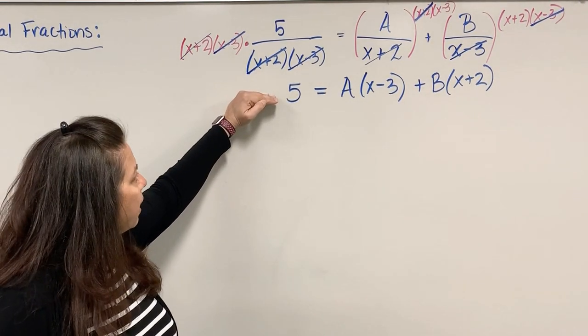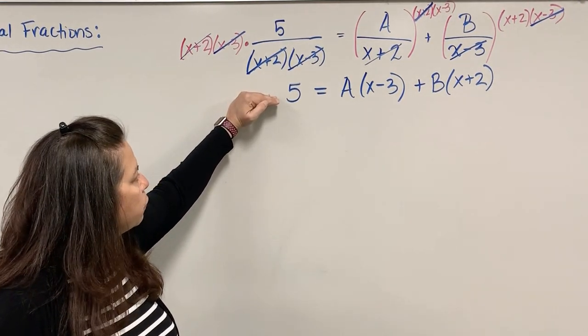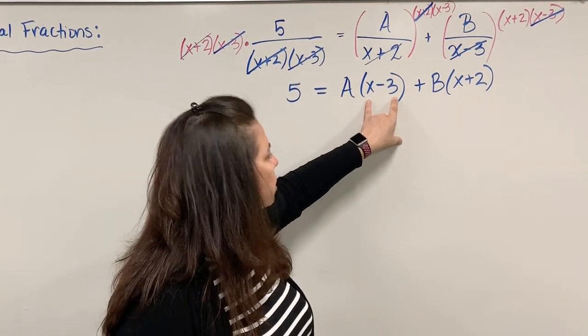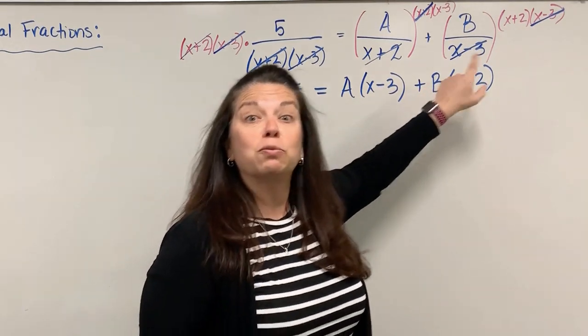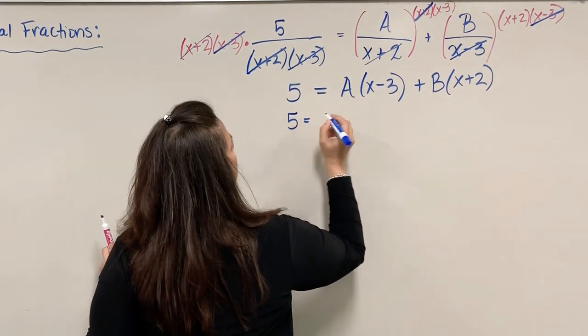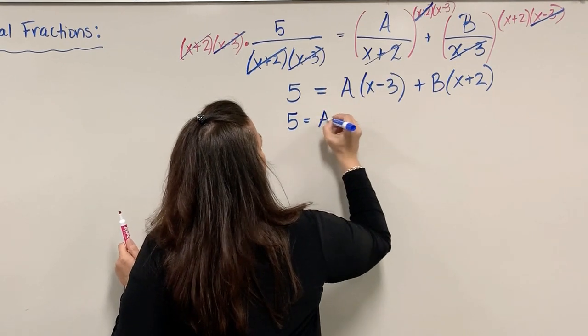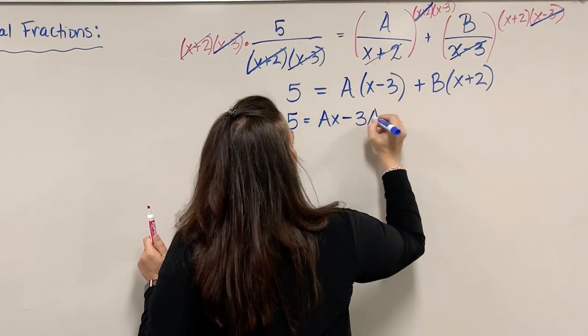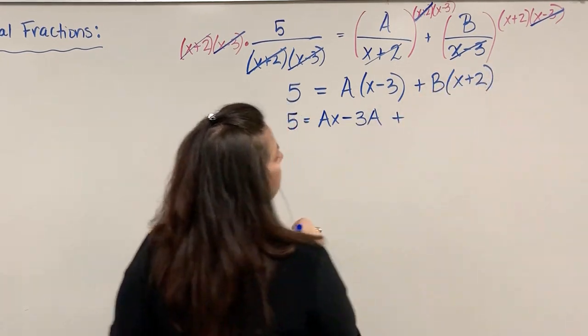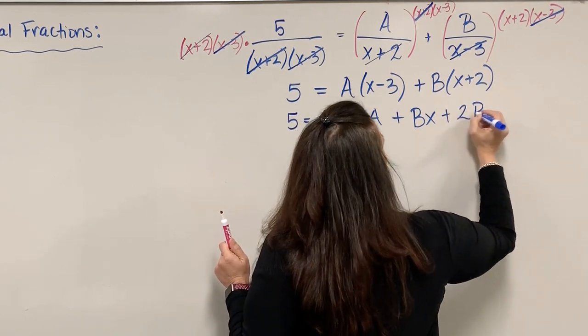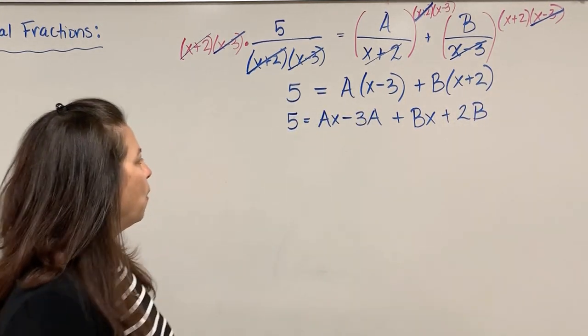Now I have a new equation. I'll continue solving. I'll distribute my A on both terms here in this first linear factor. Distribute the B in the same way. So I have 5 = Ax - 3A + Bx + 2B.